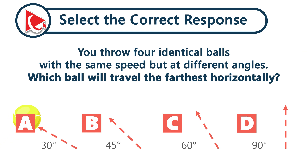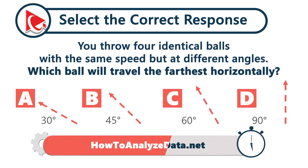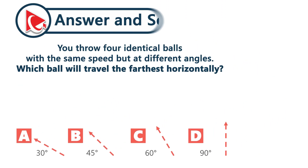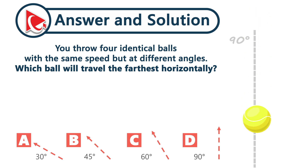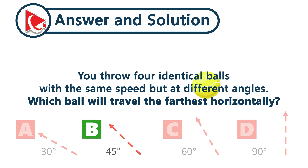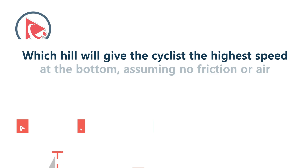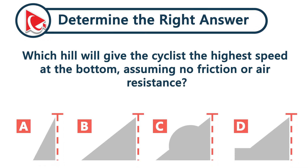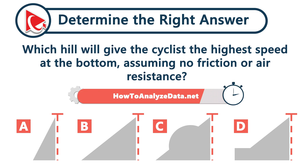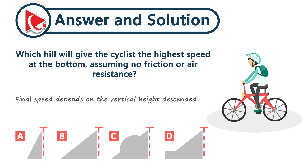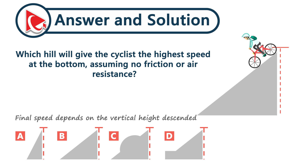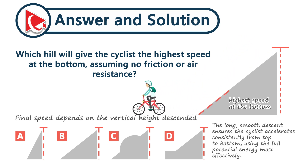You throw four identical balls with the same speed but at different angles. Which ball will travel the farthest horizontally? Next question: which hill will give the cyclist the highest speed at the bottom, assuming no friction and no air resistance? A cyclist's final speed depends on the vertical height descended, not the steepness of the hill. A long, gentle hill allows the cyclist to accelerate gradually and continuously. This smooth descent leads to the highest speed at the bottom when friction and air resistance are ignored. The correct answer is choice B.